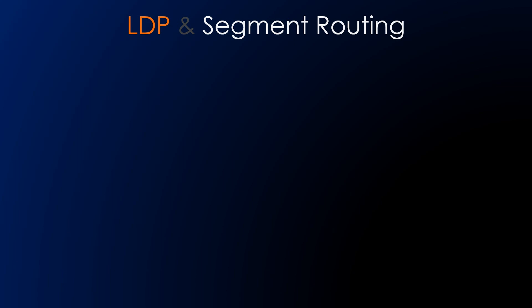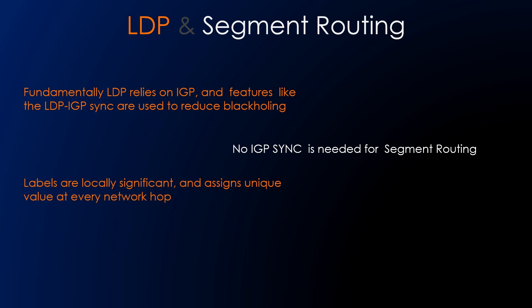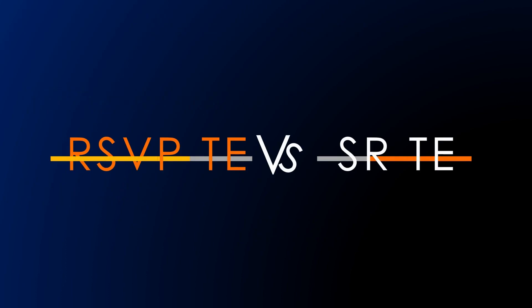Fundamentally, LDP relies on IGP and features like LDP-IGP sync are used to reduce blackholing. No LDP-IGP sync is needed with segment routing. In LDP, labels are locally significant and assigned unique values at every network hop; with segment routing, global unique labels significantly reduce the data plane state at every network hop. This concludes the LDP versus segment routing comparison.